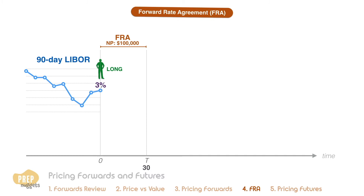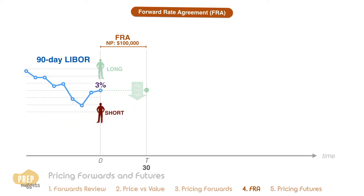By entering this contract, he agrees to be the fixed rate payor. In return, he receives floating rate payments from the short. The short can be a lender or investor who has a sum to lend in the future and wants to lock in the current interest rate.